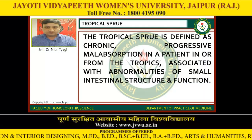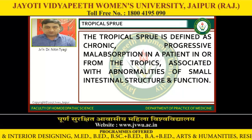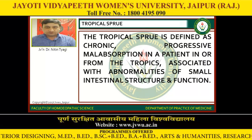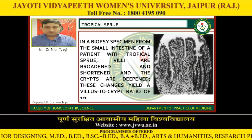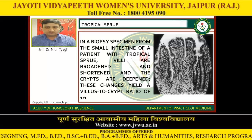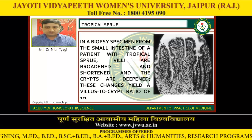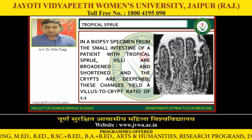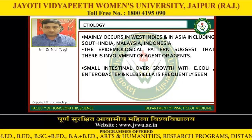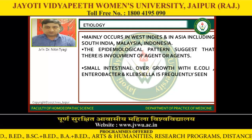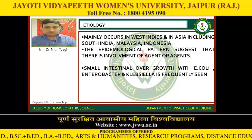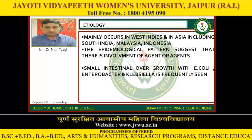Tropical sprue is defined as chronic progressive malabsorption in a patient from the tropics, associated with abnormalities of small intestinal structure and function. In a biopsy specimen from the small intestine of a patient with tropical sprue, the villi are broadened and shortened and the crypts are deepened — these changes yield a villus-to-crypt ratio of 1 to 1. Etiology: mainly occurs in the West Indies and Asia, including South India, Malaysia, and Indonesia. The epidemiological pattern suggests involvement of infectious agents. Small intestinal overgrowth with E. coli, Enterobacter, and Klebsiella are frequent.